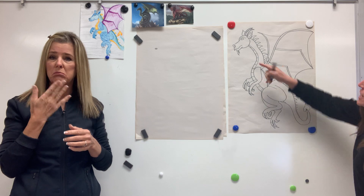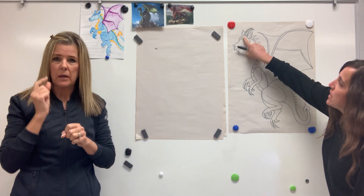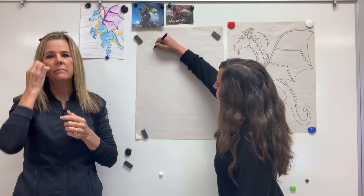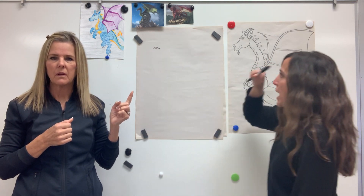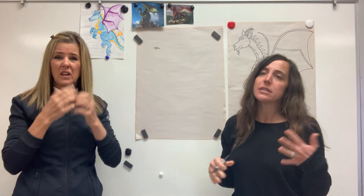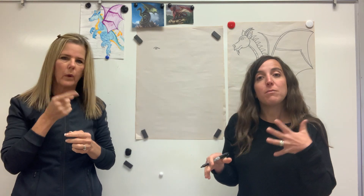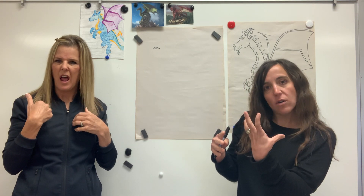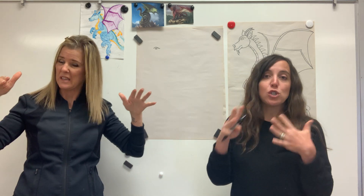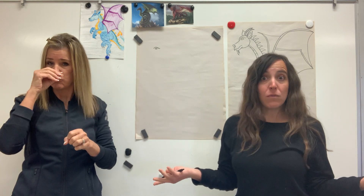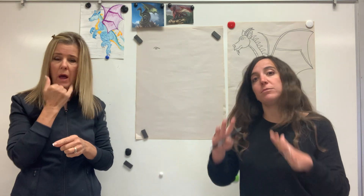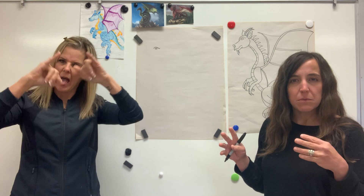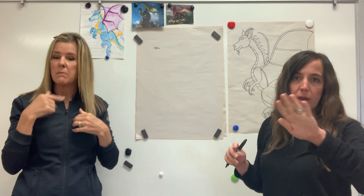Now we're going to make a curve line over his eye — it might come back just a little ways. I looked at a lot of pictures of dragons, and a lot of them have many similarities: long snouts, horns, big pointy ears, and wings. But you make your dragon however you want, because there's no right or wrong — they're not real! I'm just going to give you an outline and some ideas of similarities that dragons have. You make it your own, exactly how you want.